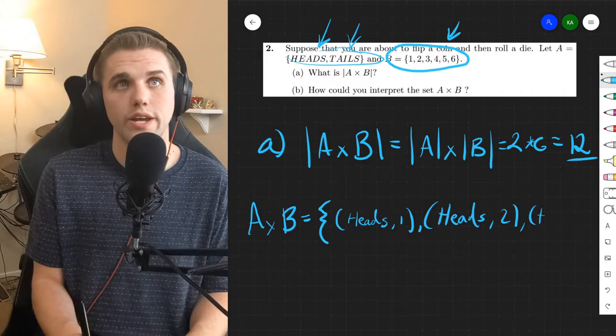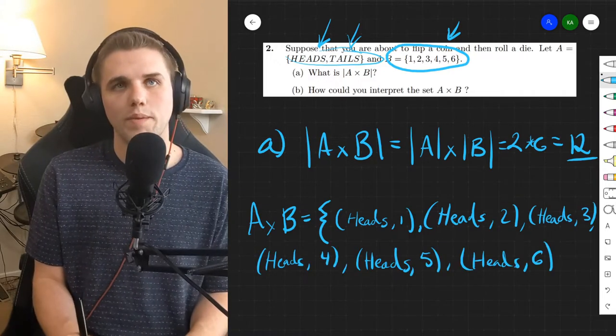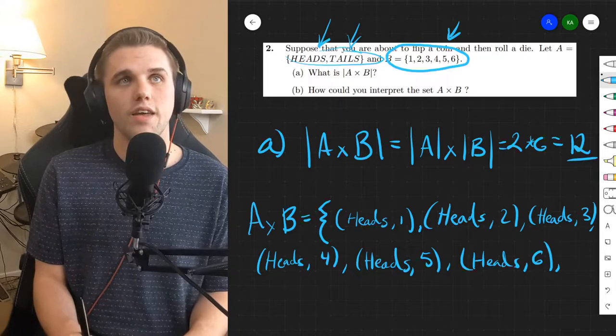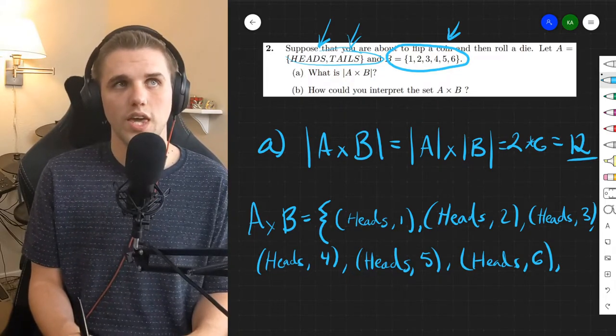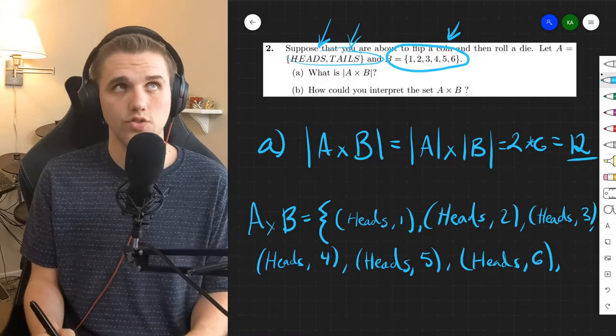We could do heads in three. We could do heads in four and all the way up to six. And then that's every combination that we can get where the first element is heads and the second element is from B.